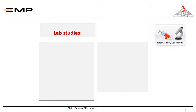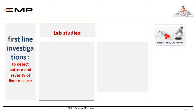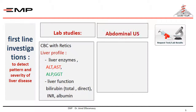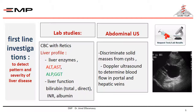Lab studies can be divided into first-line investigations to detect the pattern and severity of liver disease. This can be achieved by measuring the liver enzymes and assessment of the synthetic functions of the liver. Also, abdominal ultrasound can be considered a first-line investigation — it can help to diagnose solid masses and cystic masses, and Doppler ultrasound can help in the diagnosis of portal hypertension.